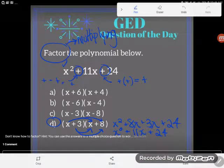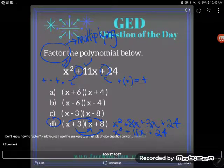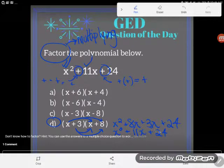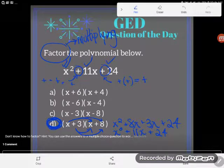And we can see this one indeed does check. I have an x squared term and an x squared term. I have positive 11x or plus 11x and I have plus 11x up there. And I have plus 24 here and I have plus 24 there. D sure was the correct answer.